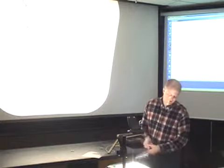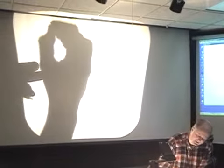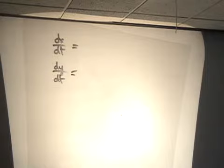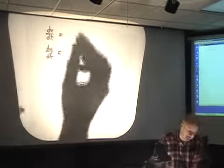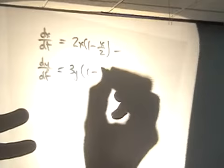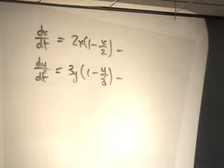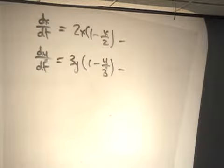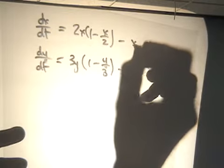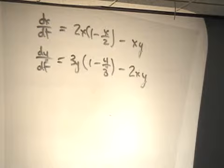Now let's apply this to a competing species model. We've got two species, x and y. In both cases, the population is modeled by a logistic model in the absence of the other species. For x, the logistic term looks like this, and for y, like this. The equilibria for x, if y is absent, would be 0 and 2; for y, they'd be 0 and 3. But since these species are competing, we have interaction terms that both have negative coefficients.